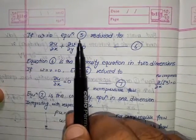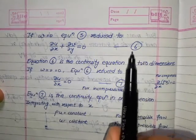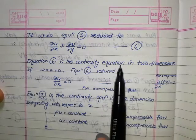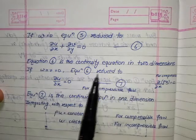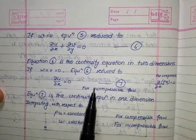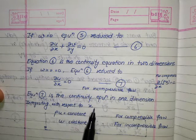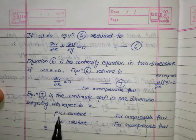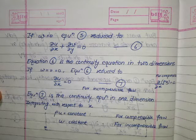If w = 0, equation 5 reduces to ∂u/∂x + ∂v/∂y = 0 — this is equation 6, the continuity equation in two dimensions. If w = 0 and v = 0, equation 6 reduces to ∂u/∂x = 0 — equation 7, the continuity equation in one dimension. Integrating gives ρu = constant for compressible flow, and u = constant for incompressible flow.